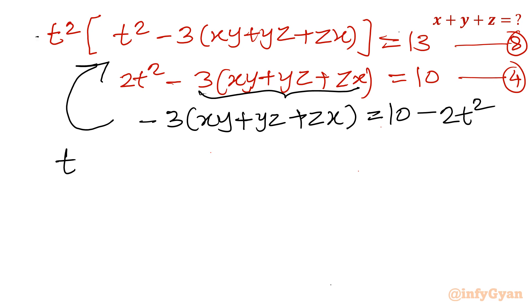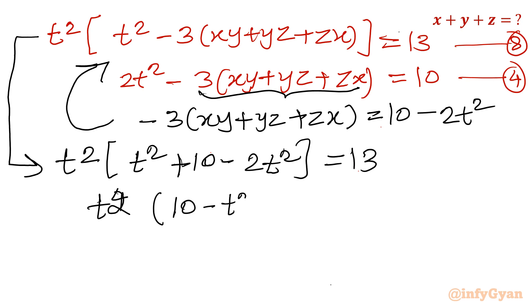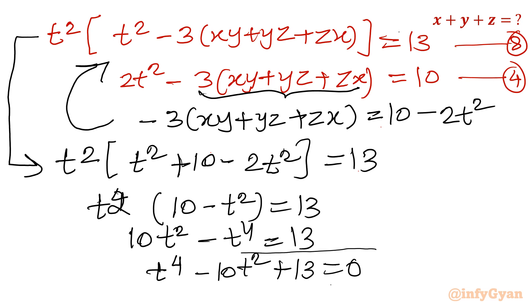Taking the product: 10t² minus t⁴ equals 13. Taking all terms to the right-hand side: t⁴ minus 10t² plus 13 equals 0. This is a quartic equation, and we will solve for the value of t — and remember, t is our required expression x plus y plus z.